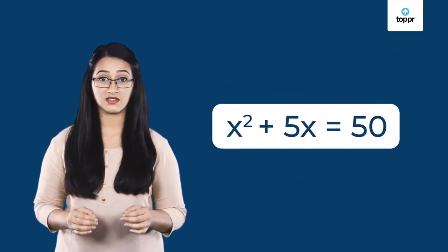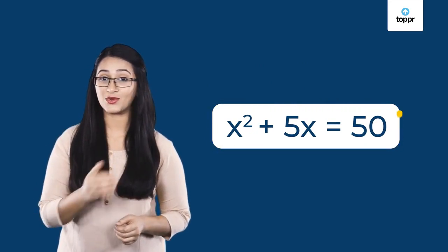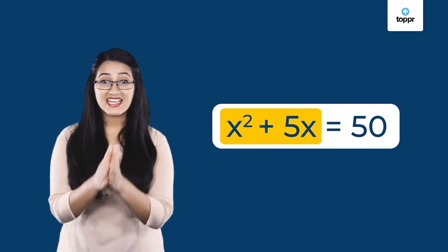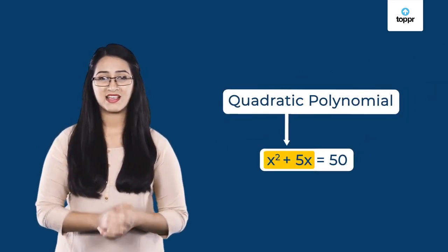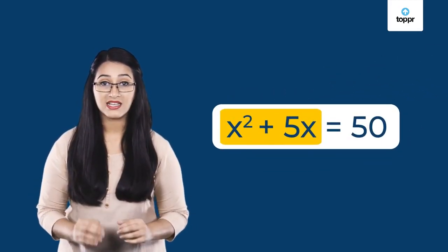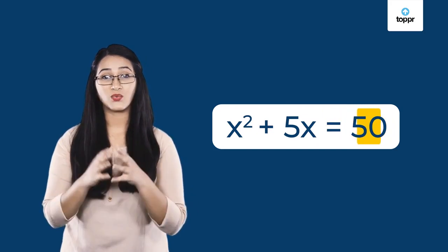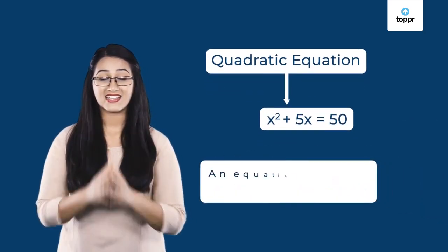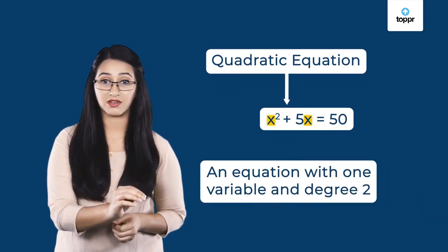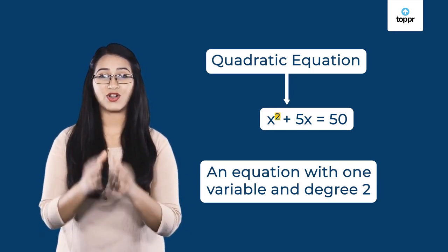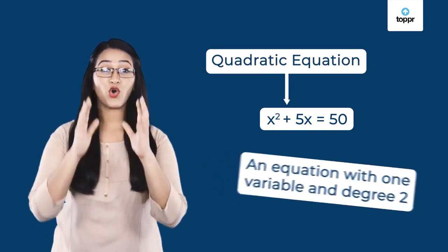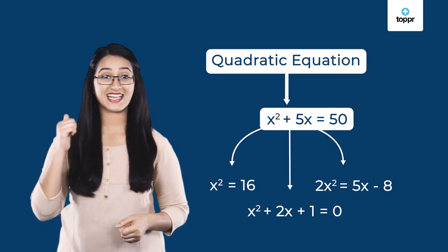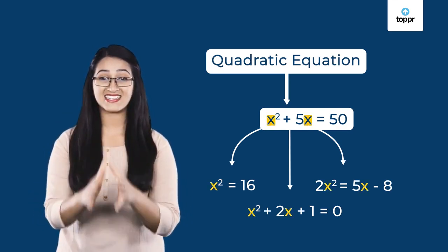So, what we got from the puzzle — X² + 5X = 50 — is an equation whose left-hand side is a quadratic polynomial. When a quadratic polynomial is equated with something, we call it a quadratic equation. In other words, equations with one variable and degree 2 are called quadratic equations. All these equations are examples of quadratic equations since they have just one variable and the degree is 2.